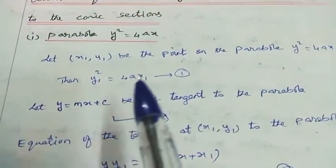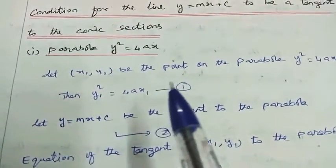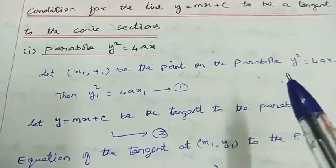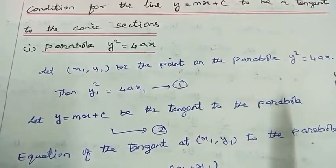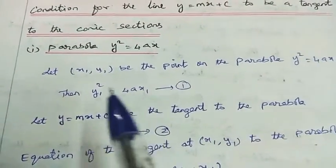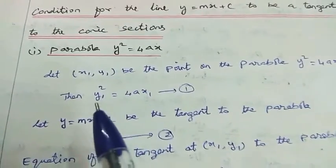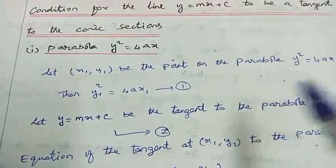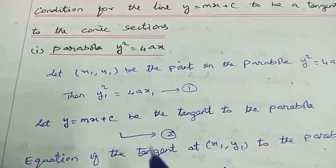Let x1, y1 be a point on the parabola y square equal to 4ax. Replacing x and y with x1 and y1, then y1 square equal to 4a into x1. That is equation number 1.